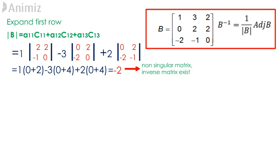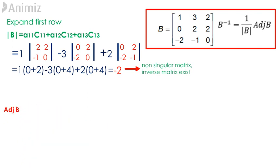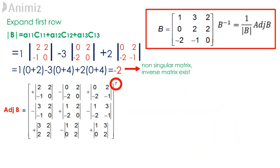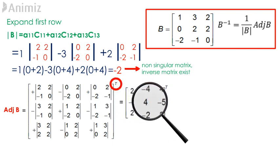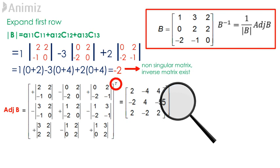Let's move on to look for the adjoined matrix of B. As we know, the adjoined matrix of B is found by transposing the cofactor matrix of B. The cofactor matrix obtained is 2, negative 4, 4, negative 2, 4, negative 5, 2, negative 2, 2.